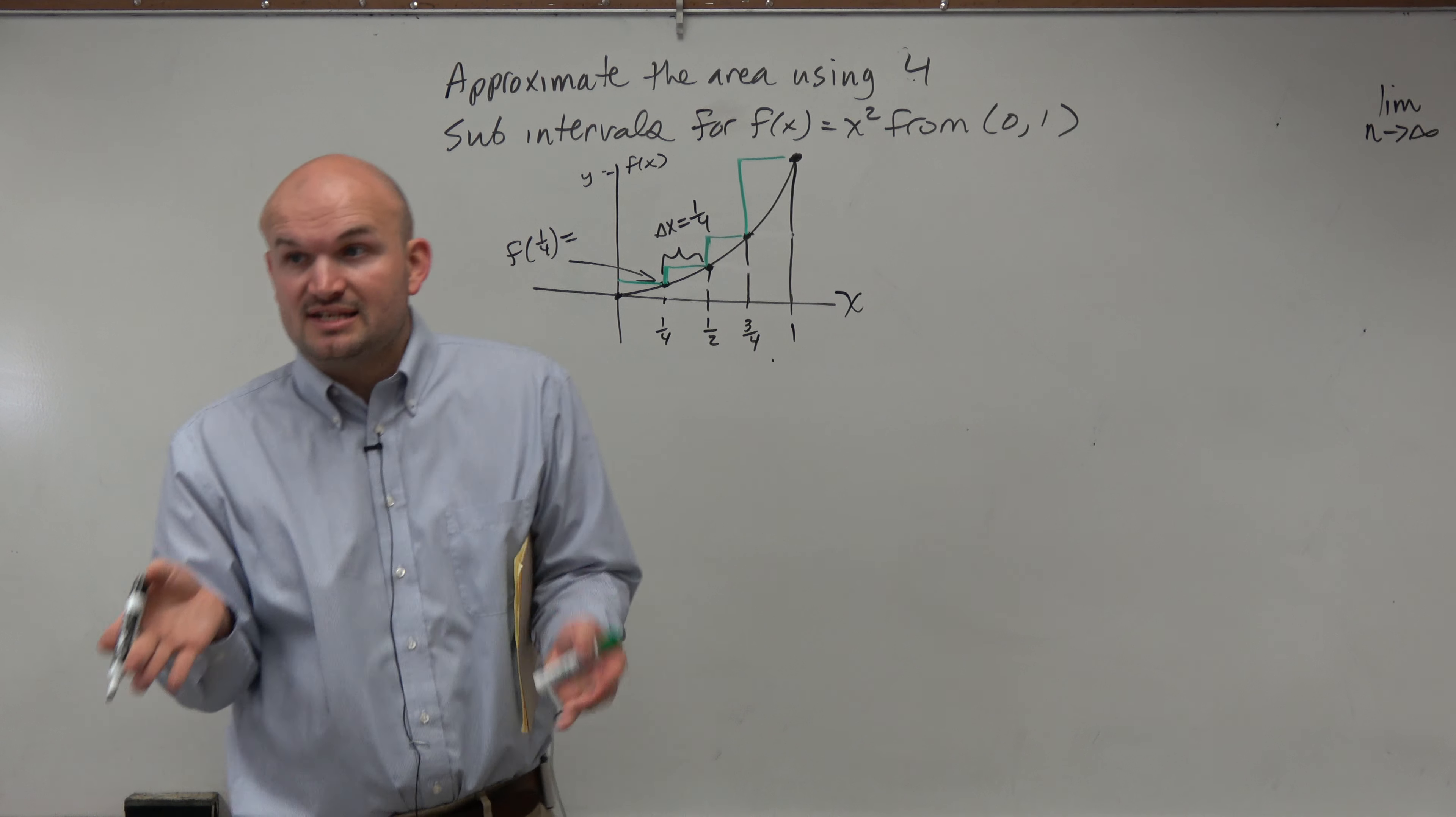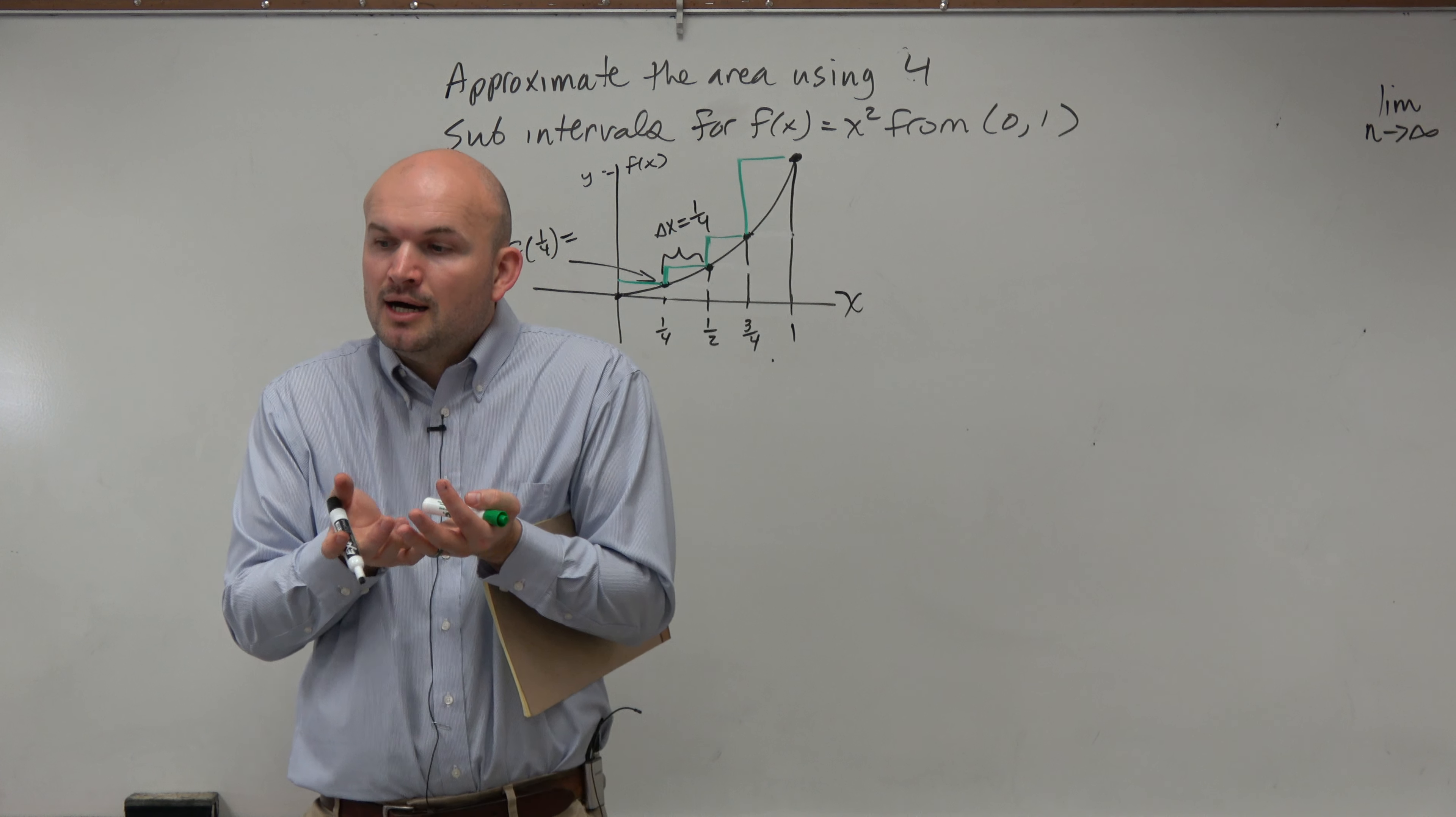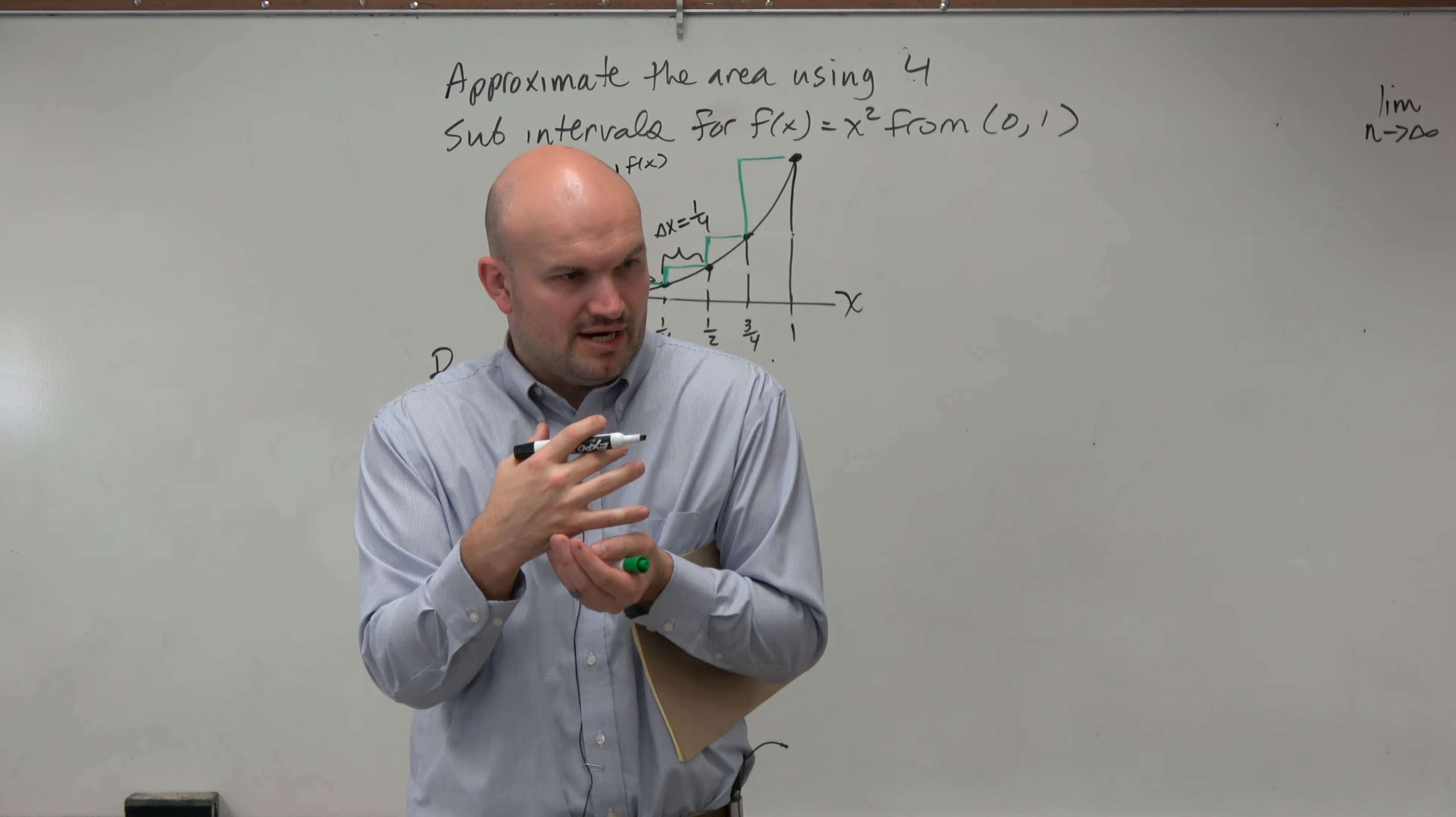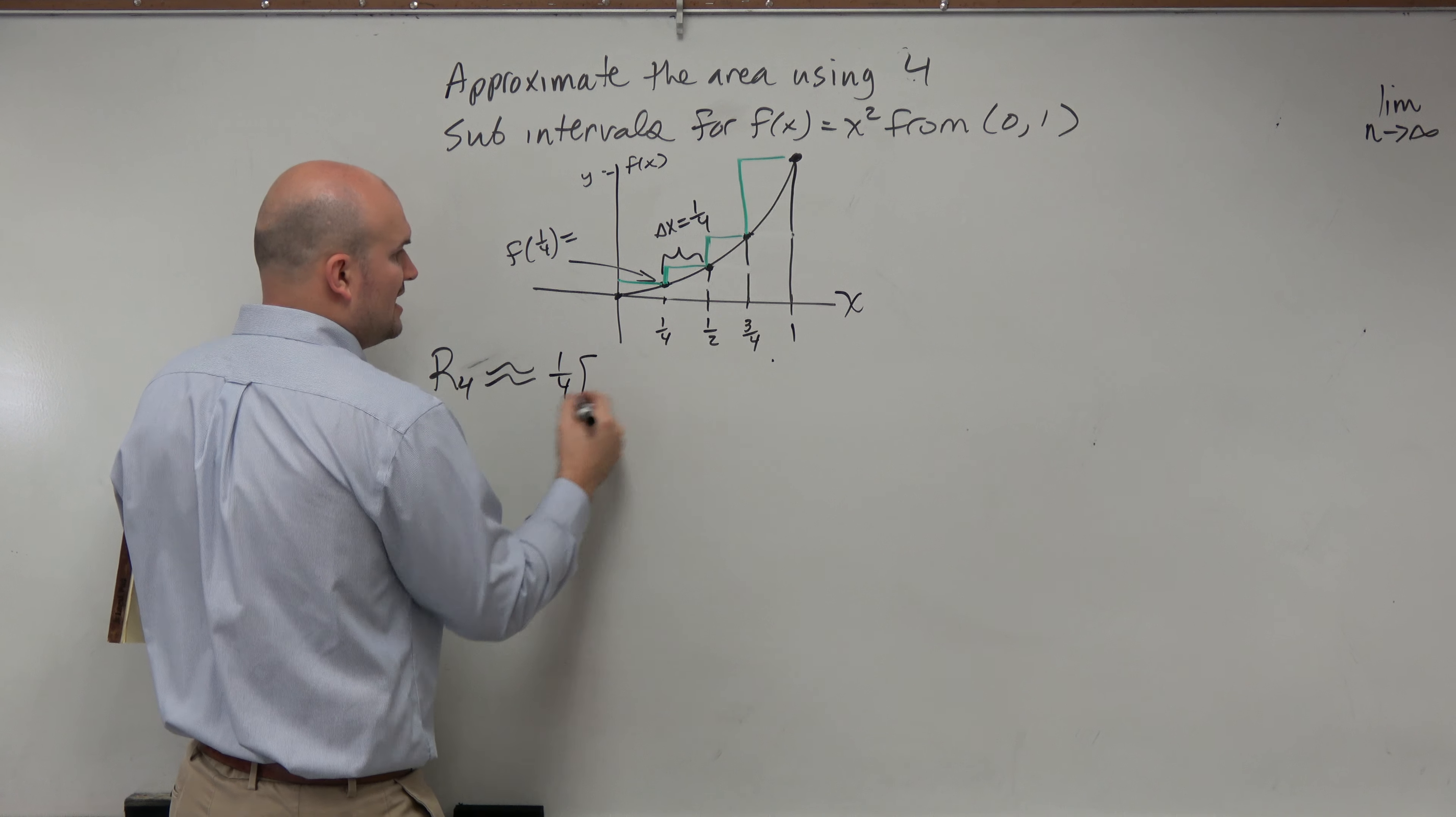Now, can we use our general rule that, since we have a uniform base, like the delta x is the same, we can just already factor that out as 1/4th, right? Yes, so I can just kind of shorthand this 1/4th times.